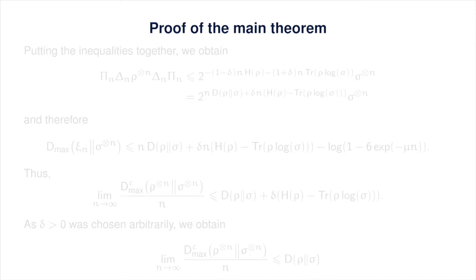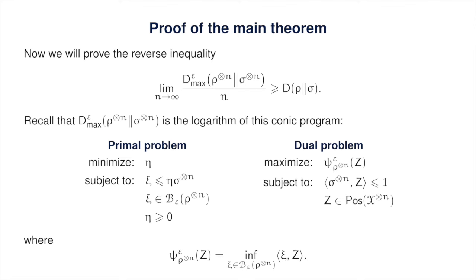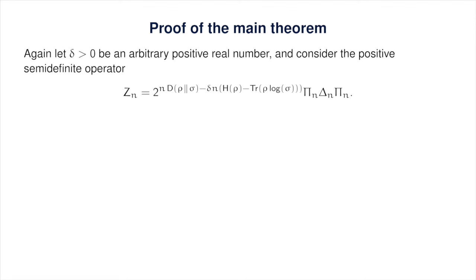In order to prove the reverse bound, we'll make use of the conic program for the smooth max relative entropy. Specifically, the smooth max relative entropy of rho tensor n with respect to sigma tensor n is the logarithm of the optimal value of the conic program obtained in the previous lecture. We're going to use the dual problem to prove a lower bound. Let delta again be an arbitrarily chosen positive real number. Here is the operator z sub n that we'll choose for each positive integer n as a dual solution to our conic program. We need to prove that z sub n is dual feasible and see what its corresponding objective value is.